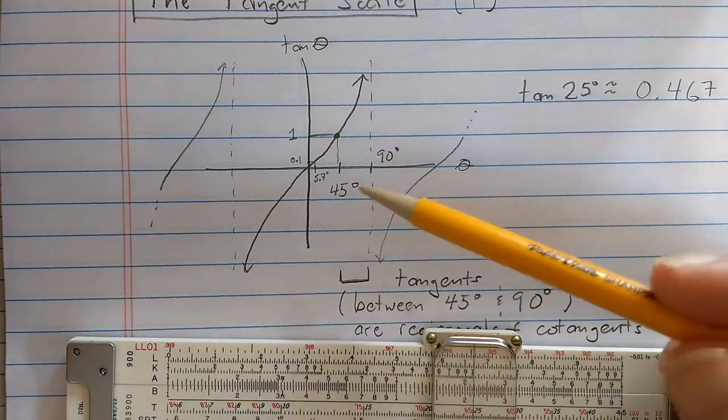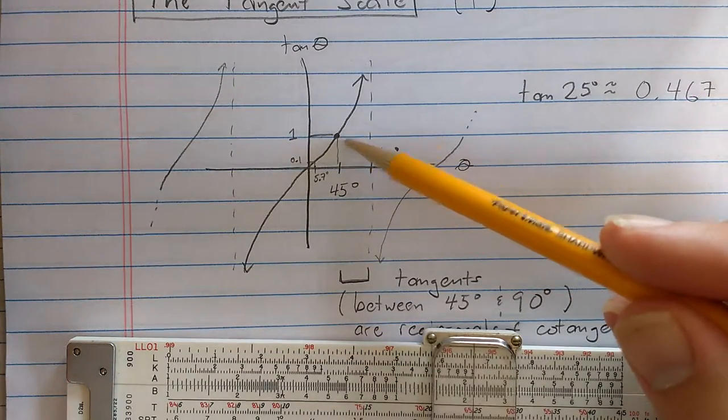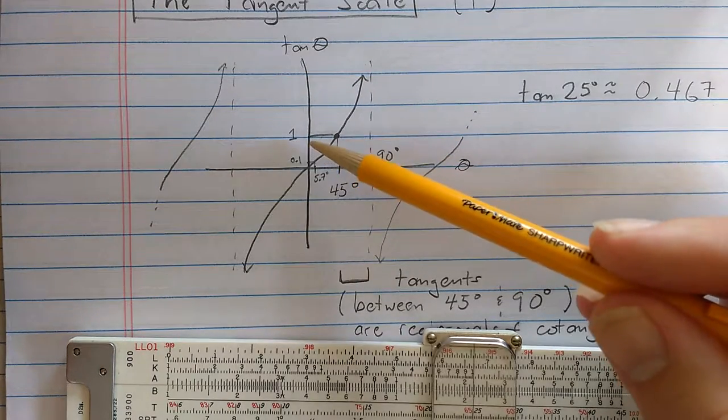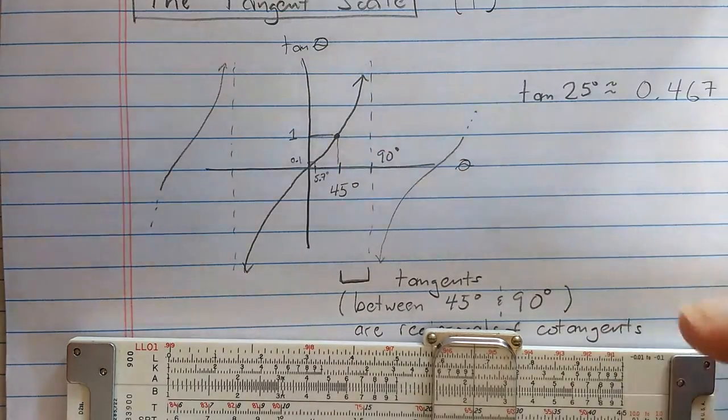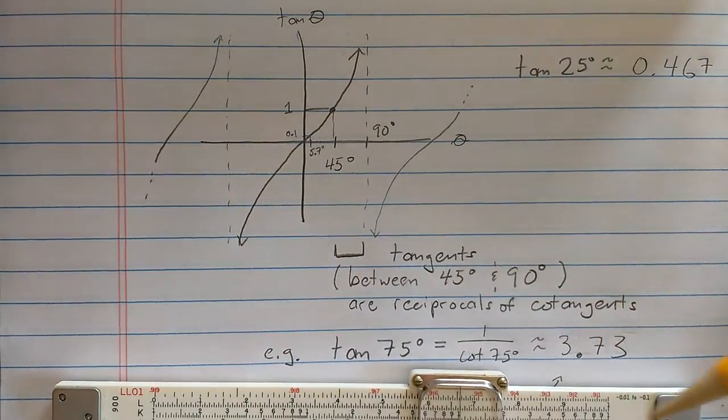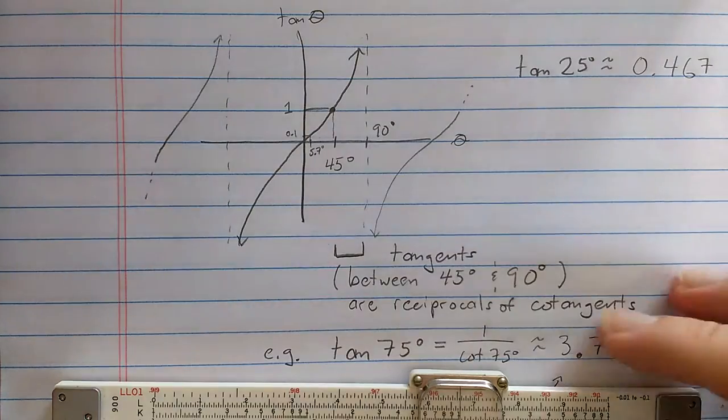The problem is, as we go between 45 degrees and 90 degrees, tangent explodes here. But if we want the next order of magnitude from 1 to 10, what we do is we use reciprocals of cotangents that are appearing on the T scale.